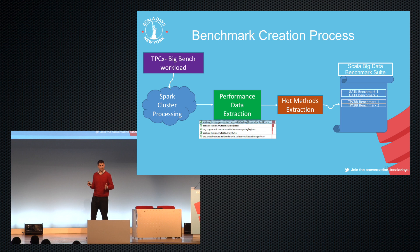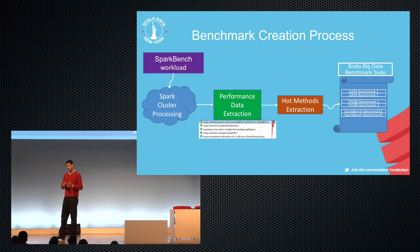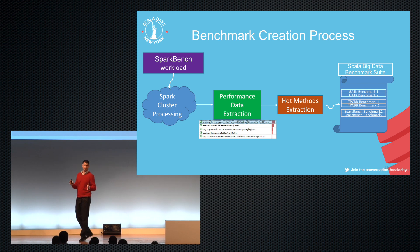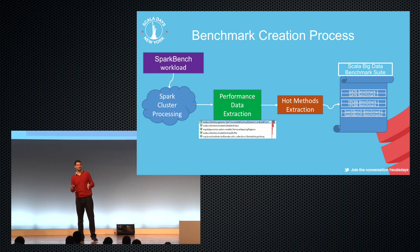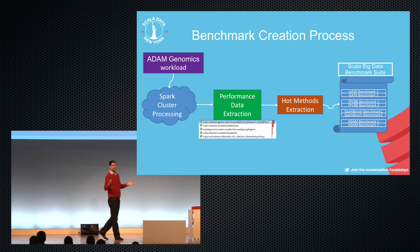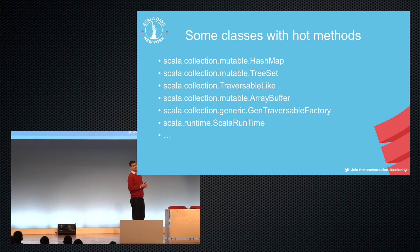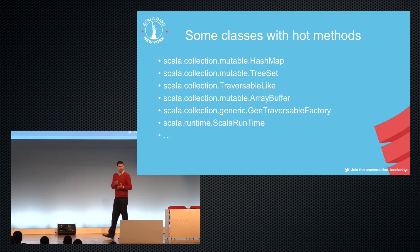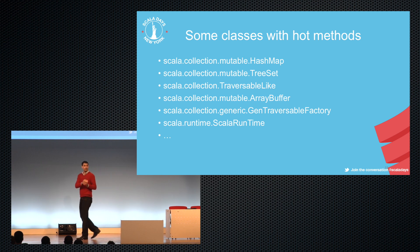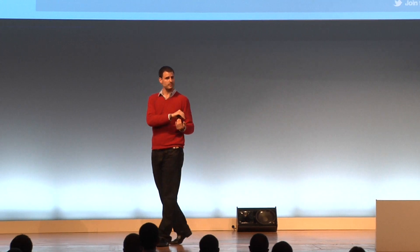This is not something we made up — these are real workloads. BigBench, used in high-performance computing. SparkBench, used industry-wide. ADAM genomics, used worldwide. Out of that, we found a bunch of hot methods — libraries that were being hit over and over and needed optimization, like the mutable hash map and the mutable tree set.